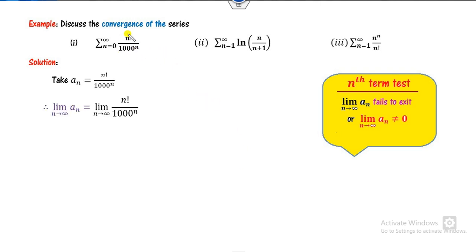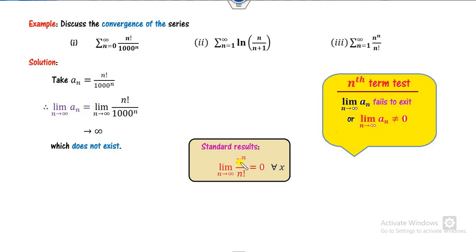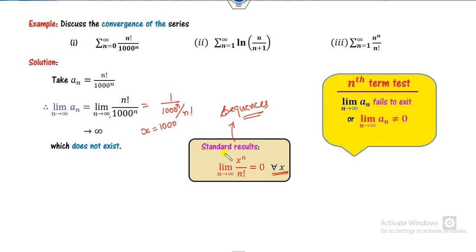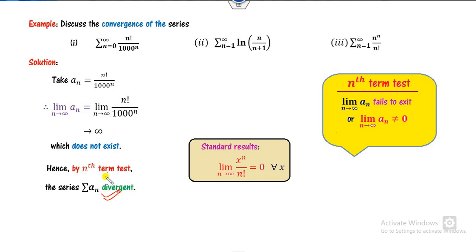For another example, using the standard result: limit as n approaches infinity of x^n over n! equals 0 for all x — proven when we discussed sequences (see my previous lecture). In this example x is 1000, so the term is 1000^n over n!. The limit is 0, meaning 1 over infinity, so the limit does not exist as a finite non-zero value. Hence by the nth term test, the series is divergent.